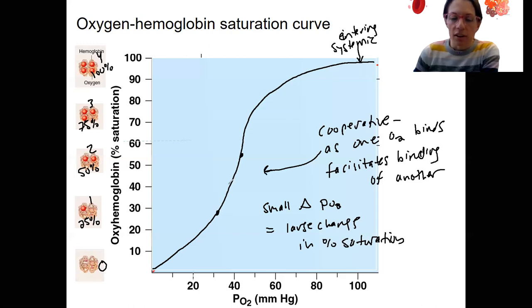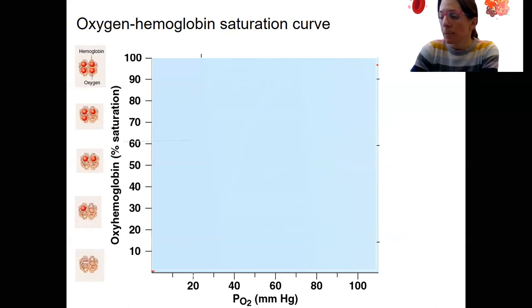Somewhere down here is going to be, that's the range. Anywhere from here to here is going to be what's happening after the systemic circuit. So after the body tissues, systemic tissues. Let's look at this with a picture that's more detailed.